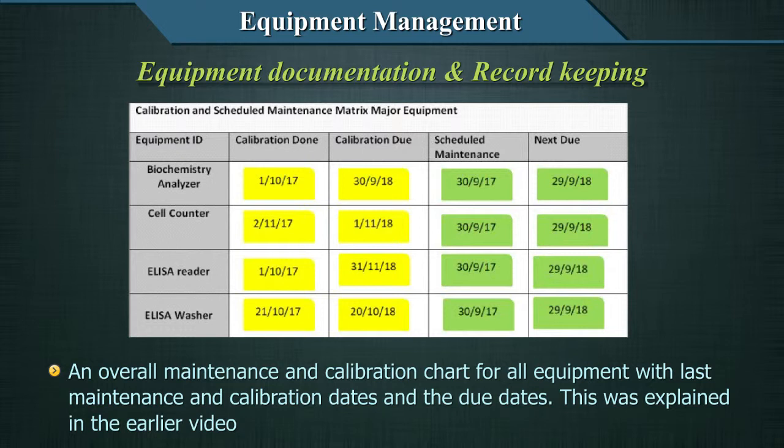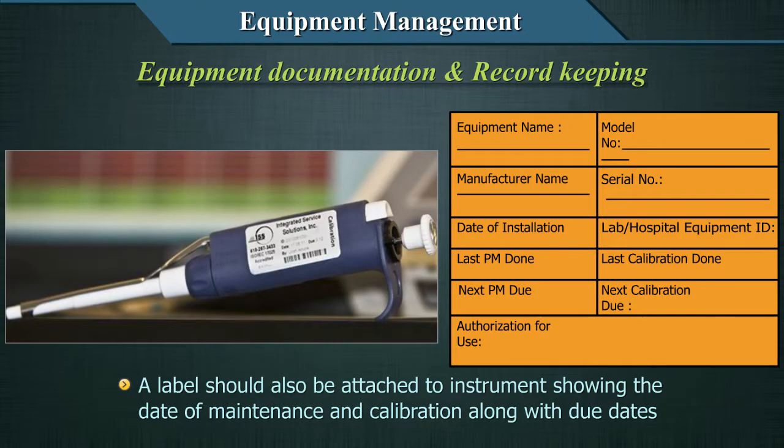It is recommended that there be an overall preventive maintenance and calibration chart for all equipment in the lab, showing the last maintenance and calibration dates and the next due dates. A label should be attached to each instrument indicating when the last maintenance and calibration was done, and when the next maintenance or service should be performed.